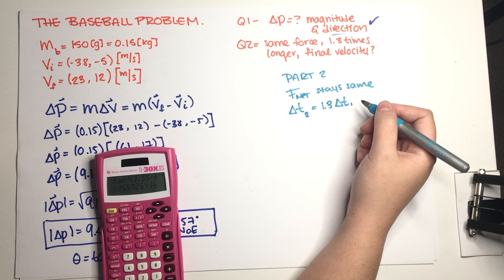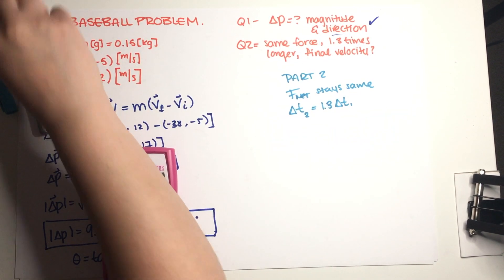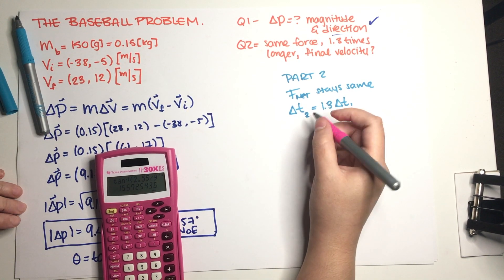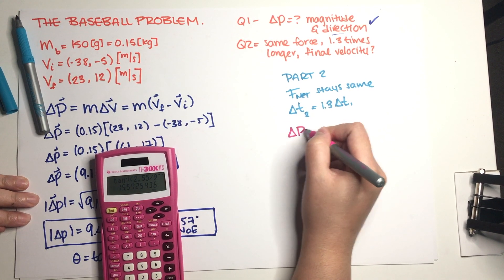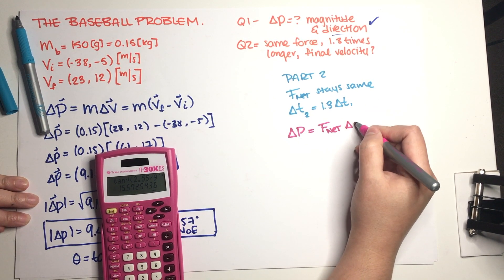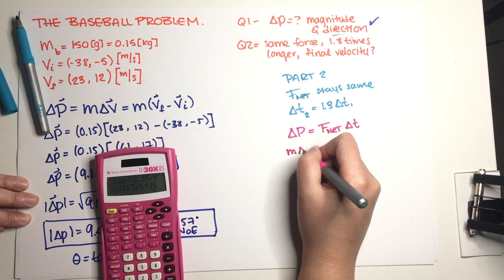Okay, so basically we just need to go back to our equation. Let me just grab another color because that was just information. So just remembering our equation, delta p is equal to F_net times delta t, and delta p is essentially m times delta v.